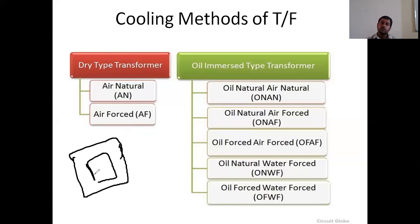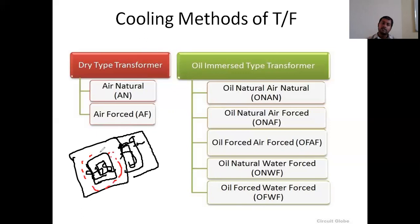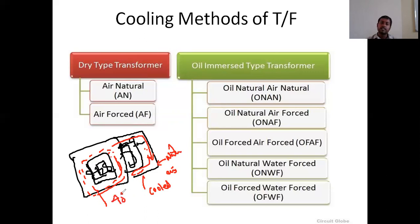In the ONAN system, this is the transformer core inside the tank, with outside radiators available. Whatever heat is available in the transformer tank will circulate into the radiator pipes. Because of natural air, the oil inside the radiators will be cooled. For example, if the inside temperature of the transformer tank is 40 degrees centigrade and in the radiators the oil temperature is 35 degrees, to balance the temperature levels, cooled low-temperature oil is sent to the transformer tank and high-temperature oil is sent to the radiators.